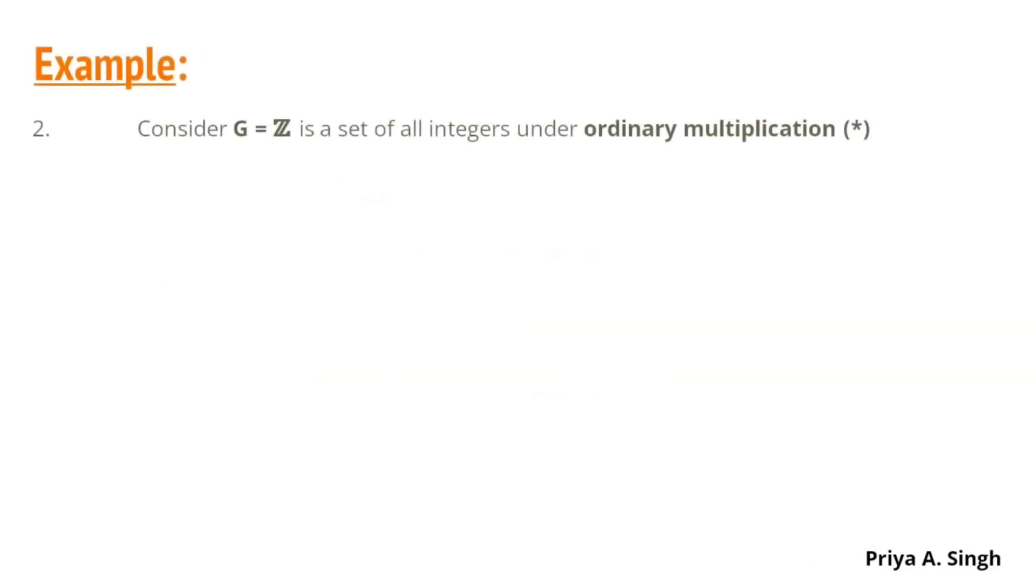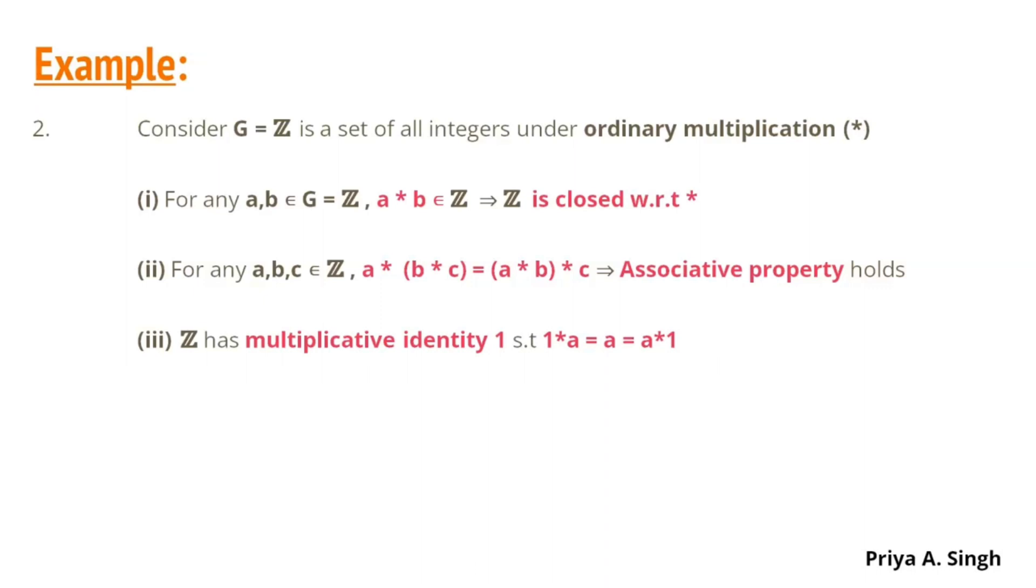Now, let us consider this next example where G is a set of all integers, that is Z, under the ordinary multiplication star. If we consider any two integers, then A star B also belongs in Z. That is, we can say that Z is closed with respect to the multiplication operation. If we consider any three elements in Z, then associative property also holds. The set Z also has multiplicative identity as 1. That is, 1 multiplied by any element A, 1 multiplied by A equals A and A multiplied by 1 also equals A.